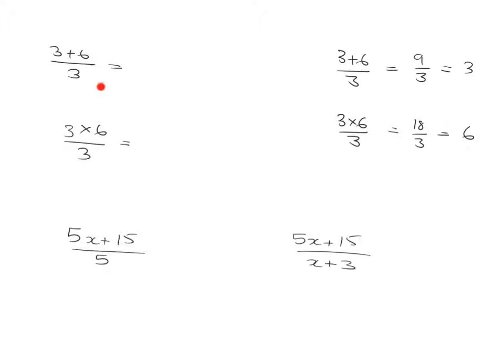Now if we have something like this, 3 plus 6 over 3, 3 plus 6 is 9, 9 over 3 is 3. And in contrast, if we have 3 times 6 over 3, we've got 3 times 6 is 18, and 18 over 3 gives you 6.